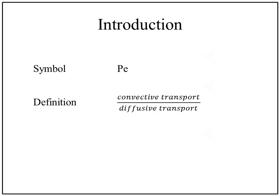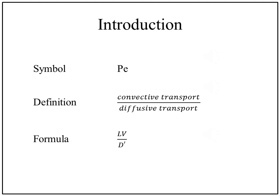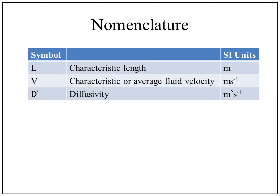It is denoted as Pe and can be defined as the ratio of convective transport to diffusive transport. It can be formalized as Lv by D', where L is the characteristic length, V the average fluid velocity, and D' is the diffusivity.